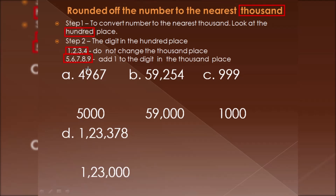Let's see the example: 4967. The thousands place is 4. We look at the hundreds place — it is 9 — which is more than 5. So we add one to the thousands place: 1 plus 4 is 5, and all remaining digits become zero. So the rounded number of 4967 is 5000.